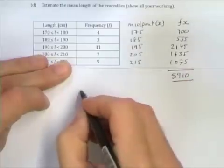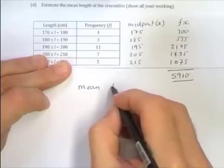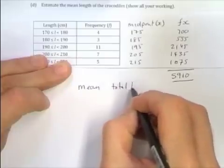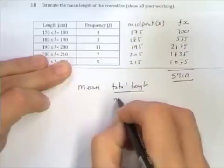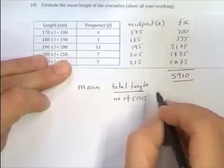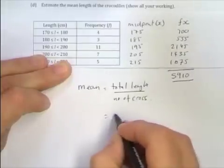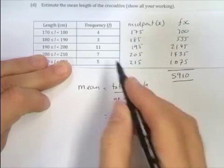Now to work out the mean. The mean is the total length divided by number of crocodiles. Now most people get this wrong because they get the total length right, but then they go and think 1, 2, 3, 4, 5. They divide by the number of categories.